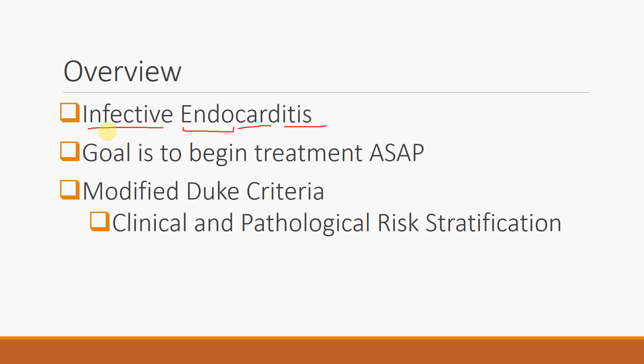Without treatment, the mortality of infective endocarditis is about 100%. So it's not hard to imagine that the goal in patient care is to begin treatment as soon as possible. This is the entire purpose of the modified Duke criteria — it allows for clinical and pathological risk stratification of patients in order to begin treatment at the earliest time.